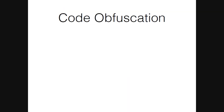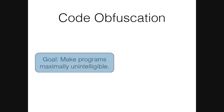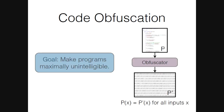However, one limitation of that construction is that it is based on knowledge-based assumptions. To talk about those, I need to deviate and discuss code obfuscation. The goal of code obfuscation is to make programs maximally unintelligible: you have a program p, you obfuscate it to construct another program p-prime that is functionally identical to p, but the hope is that p-prime hides the secrets inside p.